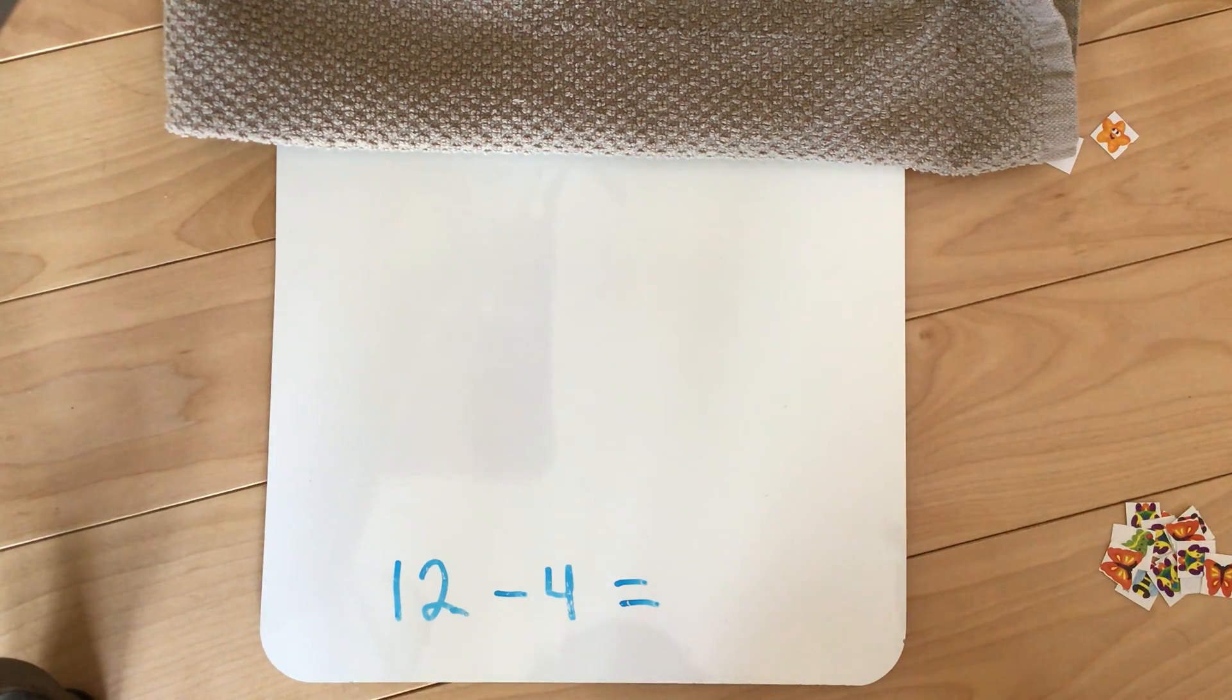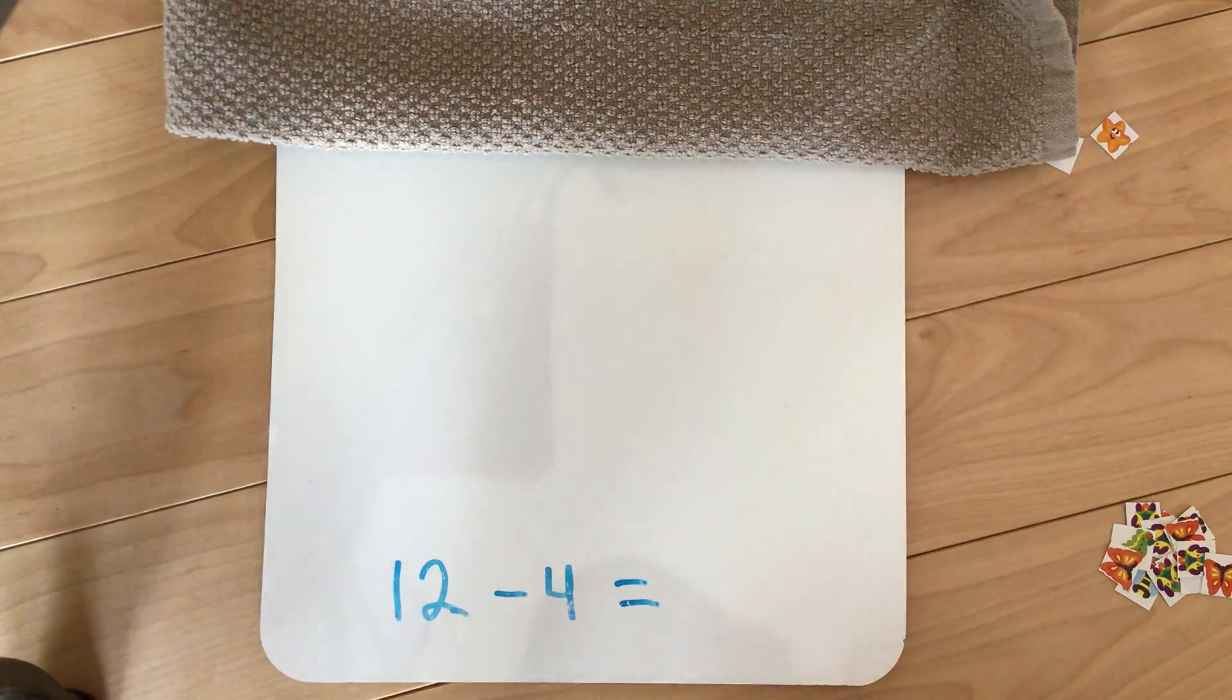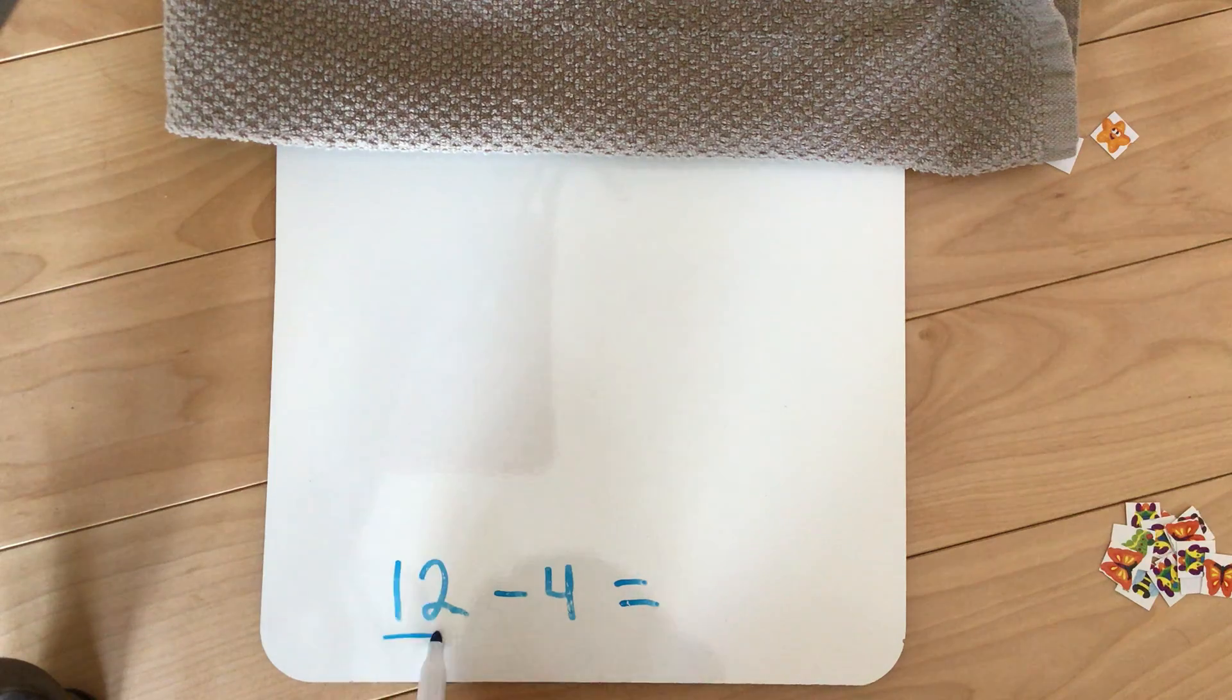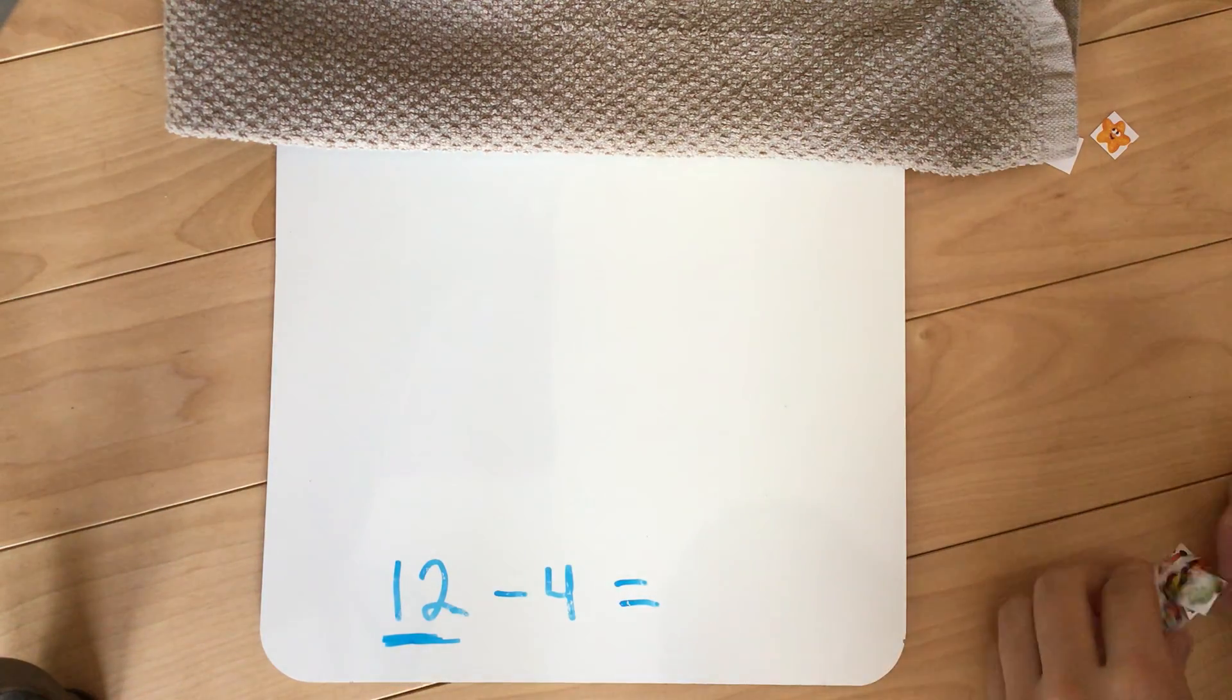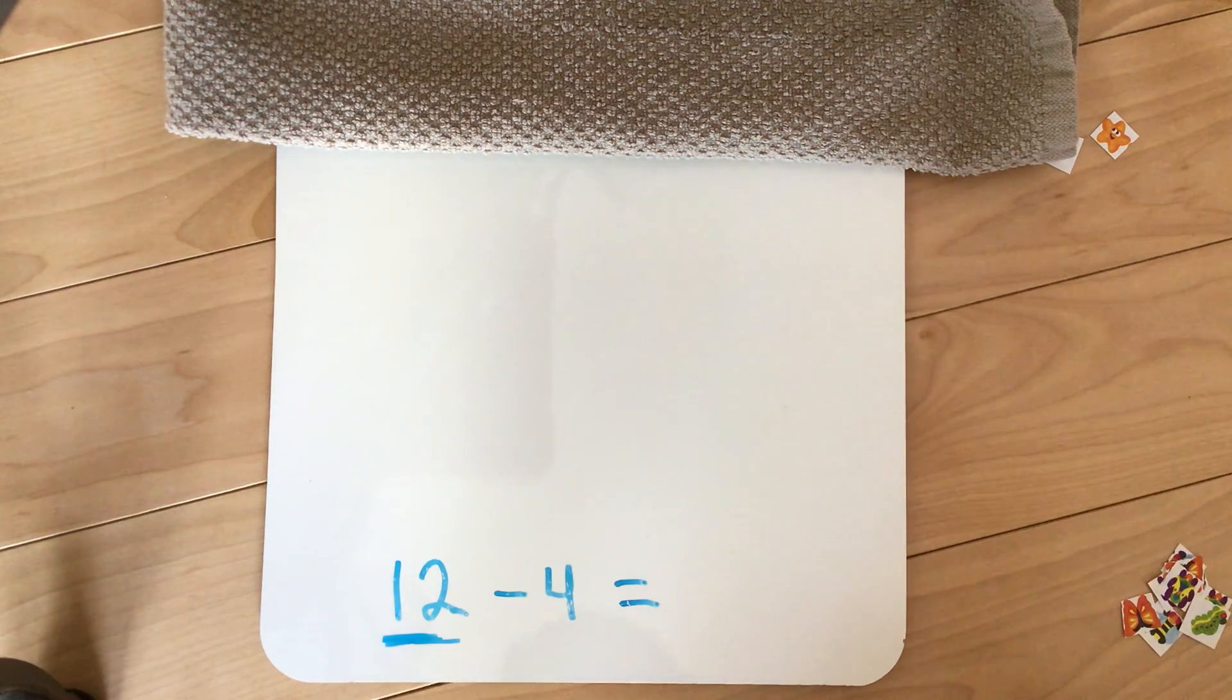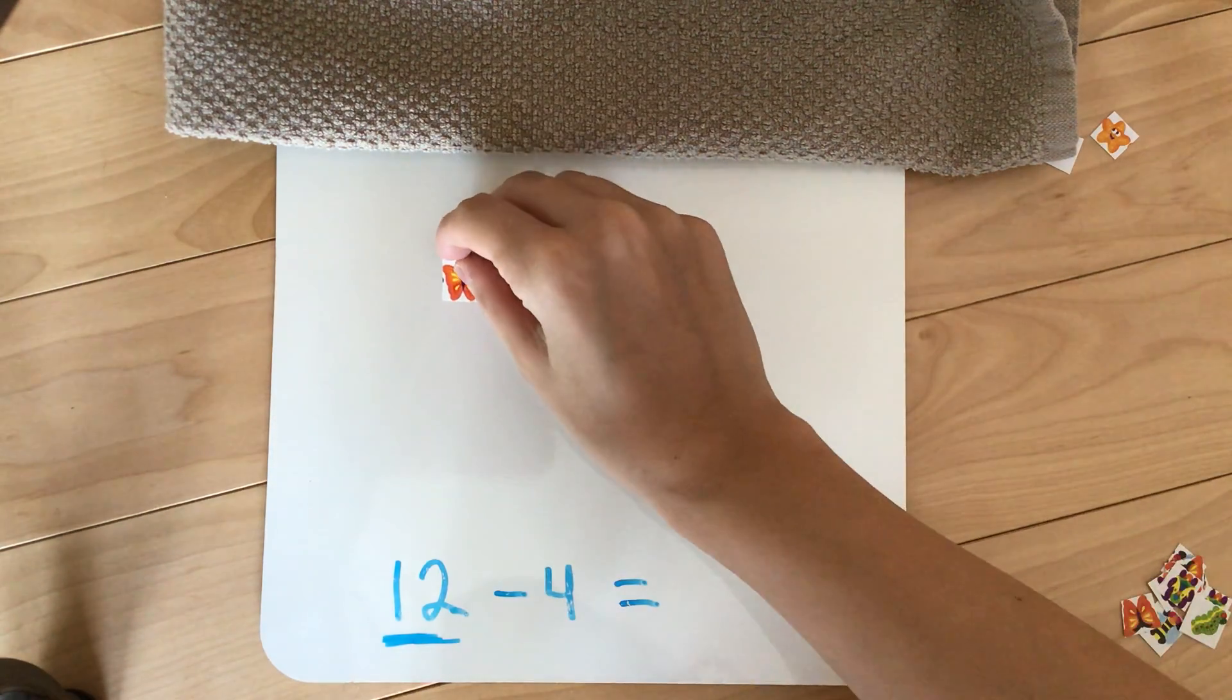Now for our manipulatives we're going to do something a little bit different. We're going to start with our first number that we see and that is our 12. We are going to count out 12 of our stickers. This time we have some little bugs instead of some under the sea creatures.